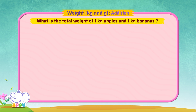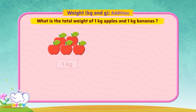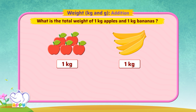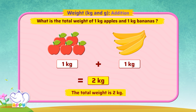What is the total weight of one kilogram of apples and one kilogram of bananas? To find the total weight, we add each of their weights. One kg plus one kg is equal to two kgs. So the total weight is two kilograms.